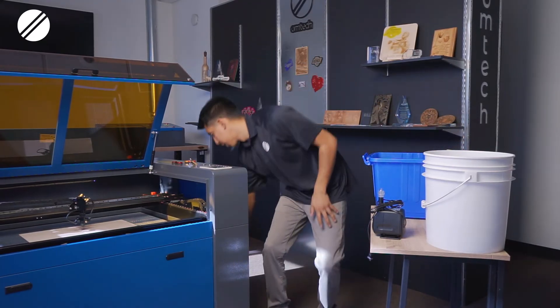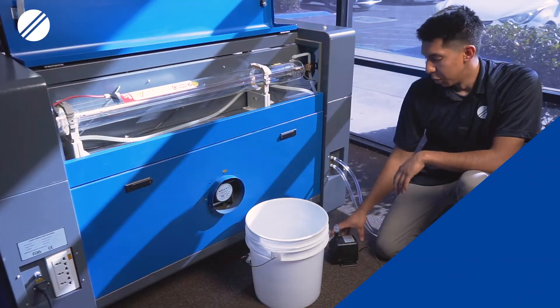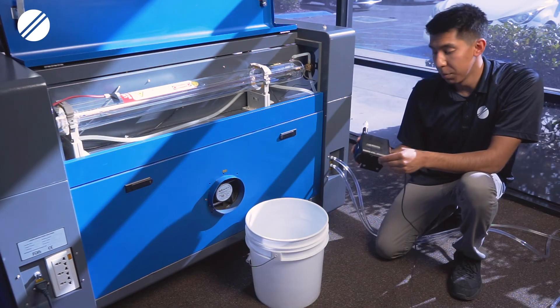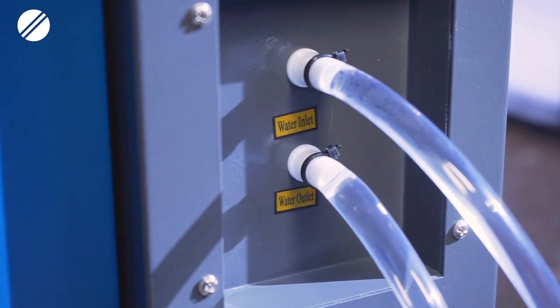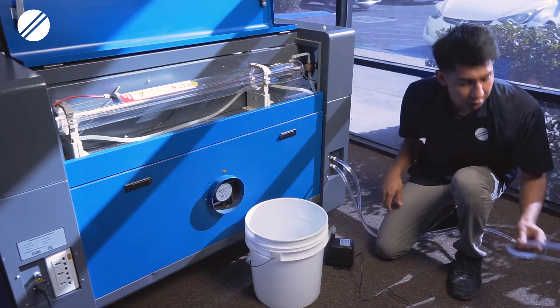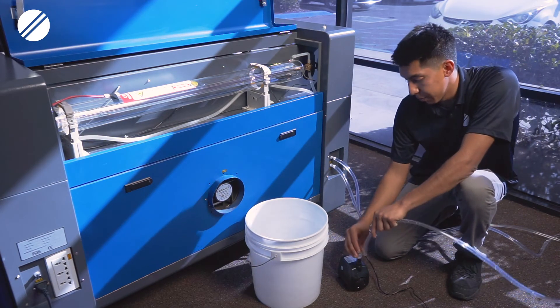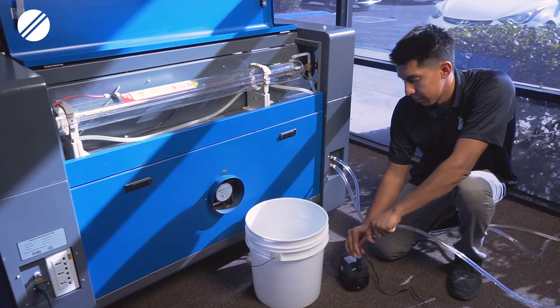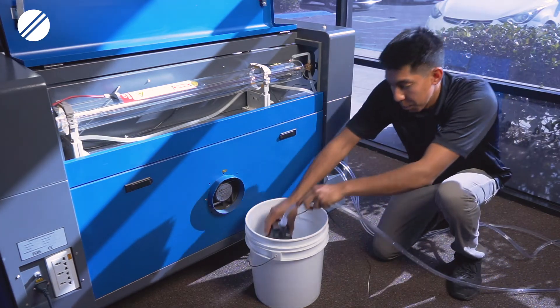For cooling, we recommend distilled water with no additives. So for the setup of your standard water pump, you would take one of the water hoses provided, you will connect one of them to the water inlet connection of the machine, you will connect that hose to the water pump itself, and you can then place the water pump inside the bucket.